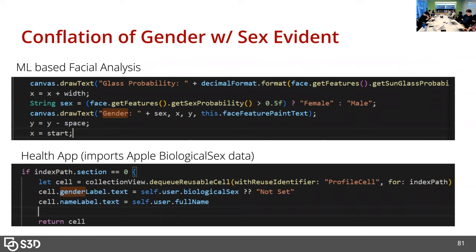Two quick qualitative insights I saw. One that was interesting is the conflation of gender with sex was evident in some code. For example, one facial recognition application had a variable in their model called 'sex' but then displayed it as 'gender,' which is kind of weird. I also saw multiple examples taking Apple's biological sex variable from HealthKit and setting it equal to something called 'gender,' which represents the conflation of biological sex with gender.